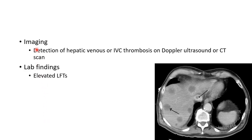Now let us see about the imaging findings in Budd-Chiari syndrome. We can detect hepatic venous or inferior vena cava thrombosis on Doppler ultrasound or CT scan. This picture shows a CT scan of liver metastasis leading to Budd-Chiari syndrome, showing a clot in the IVC which is characteristic of Budd-Chiari syndrome. Remember, hepatocellular carcinoma or liver metastasis are risk factors for Budd-Chiari syndrome. Lab findings show elevated liver function tests.